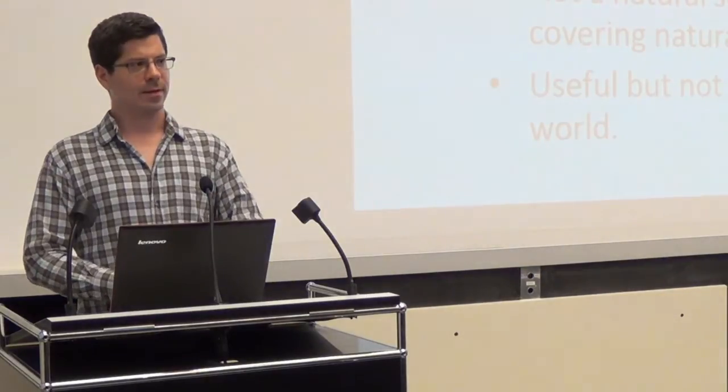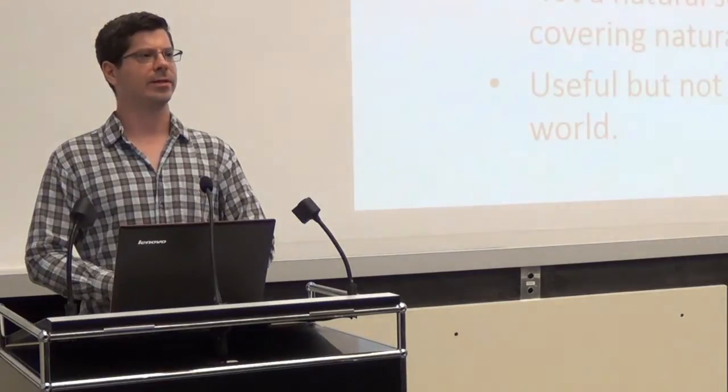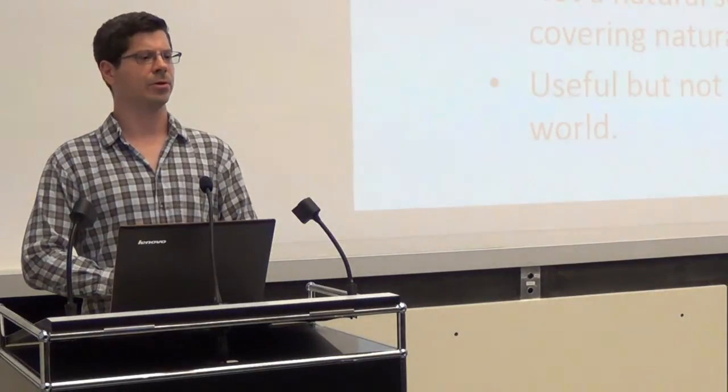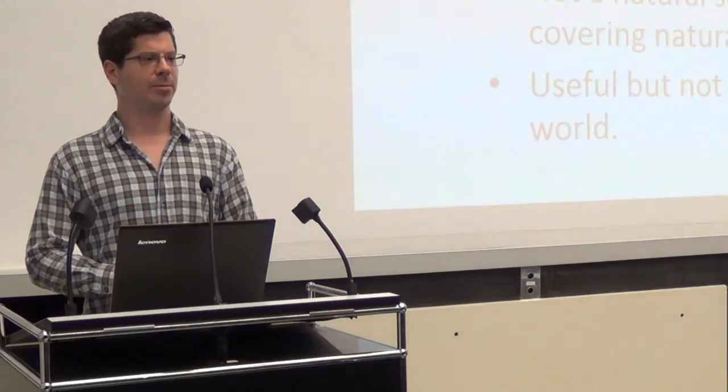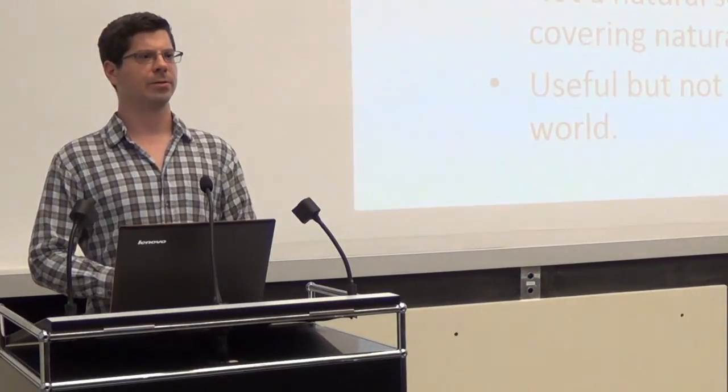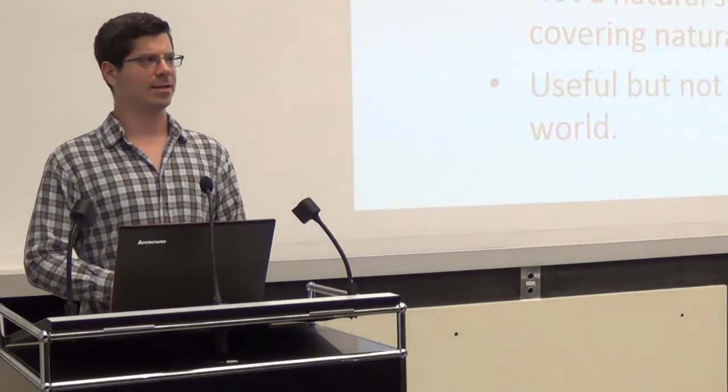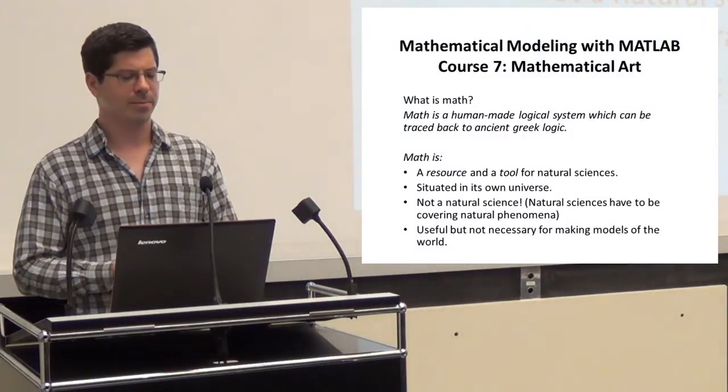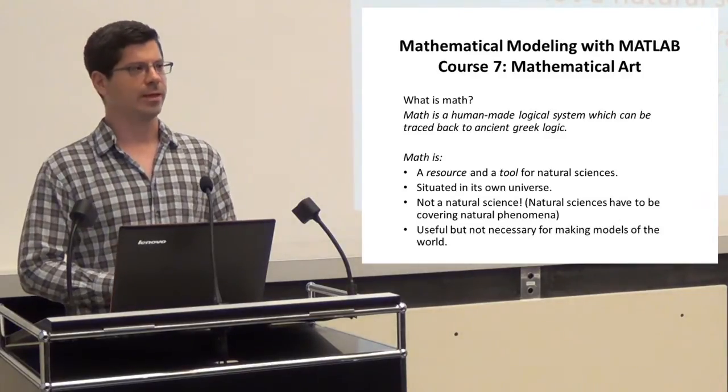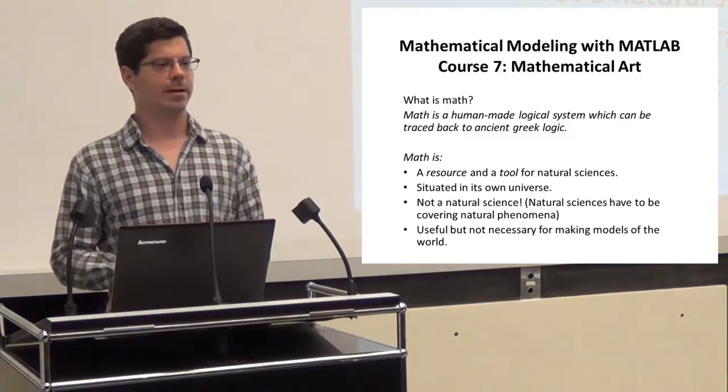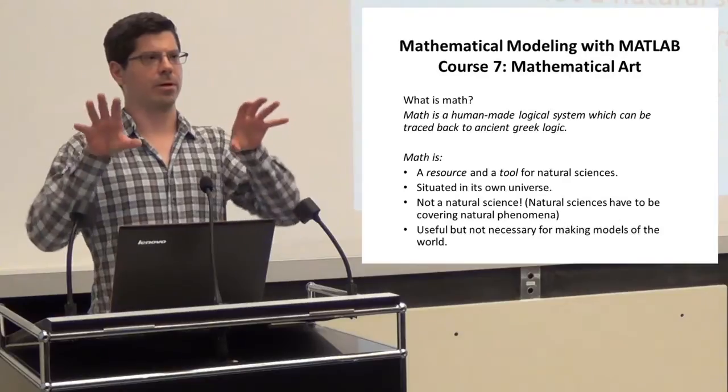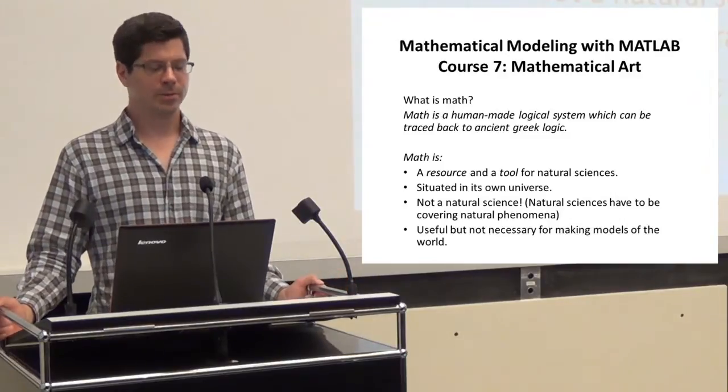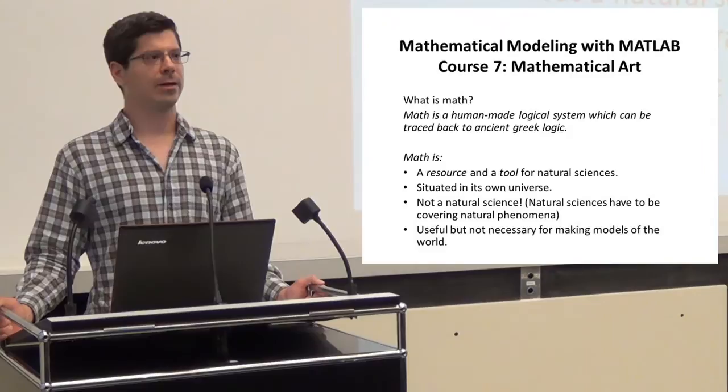What is math? That's a tough one. I don't know a definition of math that really goes everywhere and says everything about math. There is a U.S. American mathematician, Douglas Hofstadter, who wrote a book, Gödel Escher Bach, which is excellent and which really shows you extremely well what he sees as being math. I would say there is an easier definition. Math is a human-made logical system which can be traced back to ancient Greek logic. Ancient Greeks thought, okay, if one thing is true and the other thing is true, both are true. Both together are true too, which is the fundamentals of what we now call math.